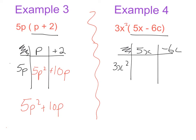3x squared along the side and along the top I'm going to have 5x and minus 6c. We will do our numbers first. 3 multiplied by 5 is going to give me 15. x squared multiplied by x - x squared remember is equal to x by x - and now we're multiplying that by another x which gives me x cubed. So that will be 15x cubed.